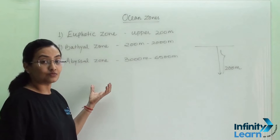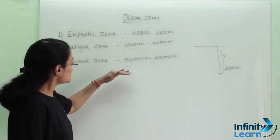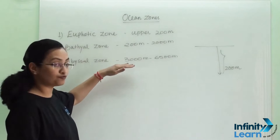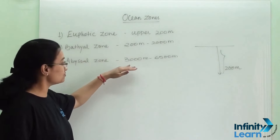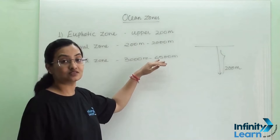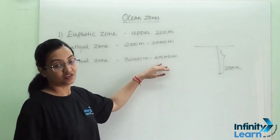Then comes the abyssal zone. This starts after the bathyal zone. It starts from 3000 meters and goes up till 6500 meters.